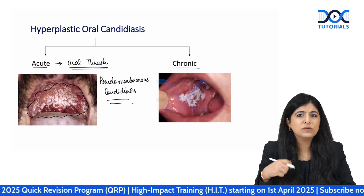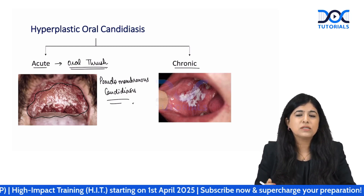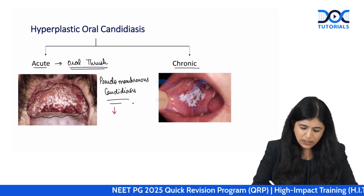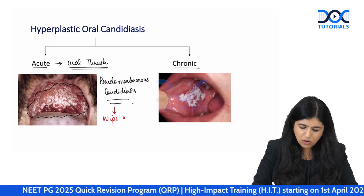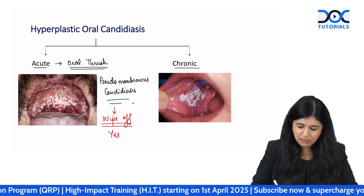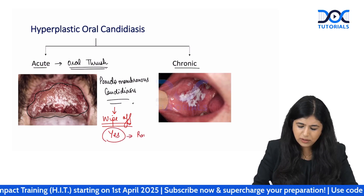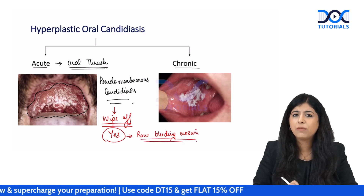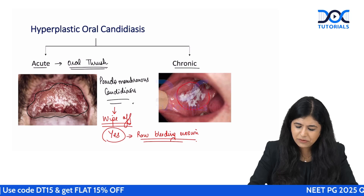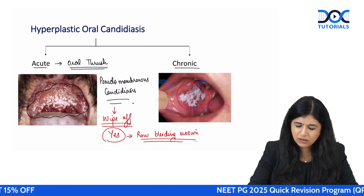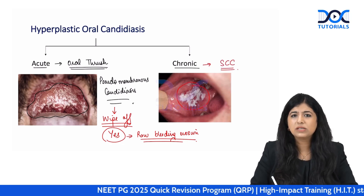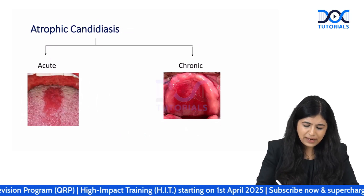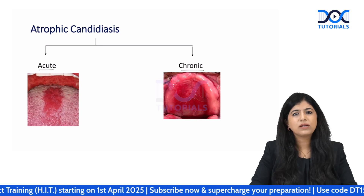An important additional risk factor for oral thrush is a patient with asthma using inhalers with poor technique, causing steroid deposition in the oral cavity. This is also called pseudomembranous candidiasis. The pseudomembrane can be wiped off with gauze, leaving behind a raw bleeding erosion. Chronic hyperplastic candidiasis is relatively rare but is a risk factor — a premalignant condition — for developing oral squamous cell carcinoma.